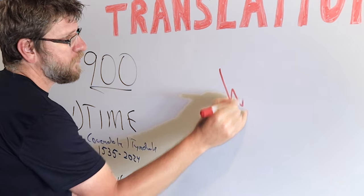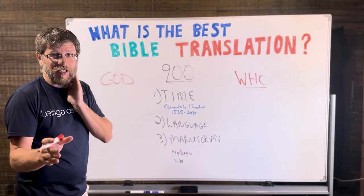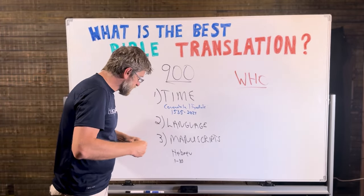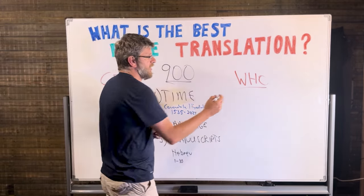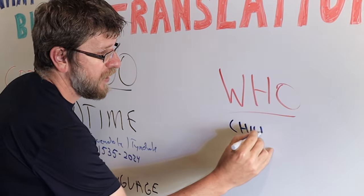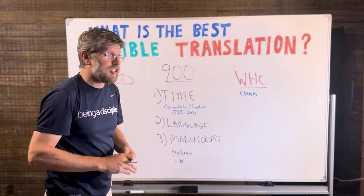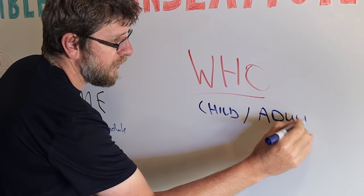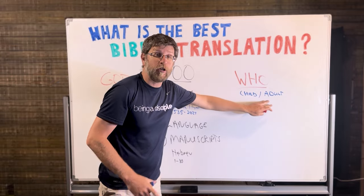And the first one is, who is using the translation? Sounds basic, but there is a big difference between a young person, a child. If a child is reading it, they need an easy to understand, easy to comprehend translation. Versus if you have someone that is an adult or elderly, they may want even, for example, just large print. Not all translations have a large print Bible.